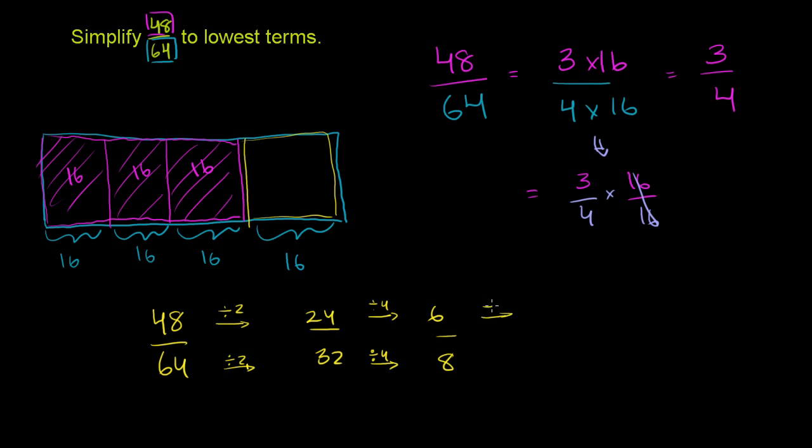So if you divide the numerator by 2, you get 3. You divide the denominator by 2, you get 4. And so this is the simplest possible terms. Because 3 and 4 share no common factors greater than 1. So we're in lowest possible terms.